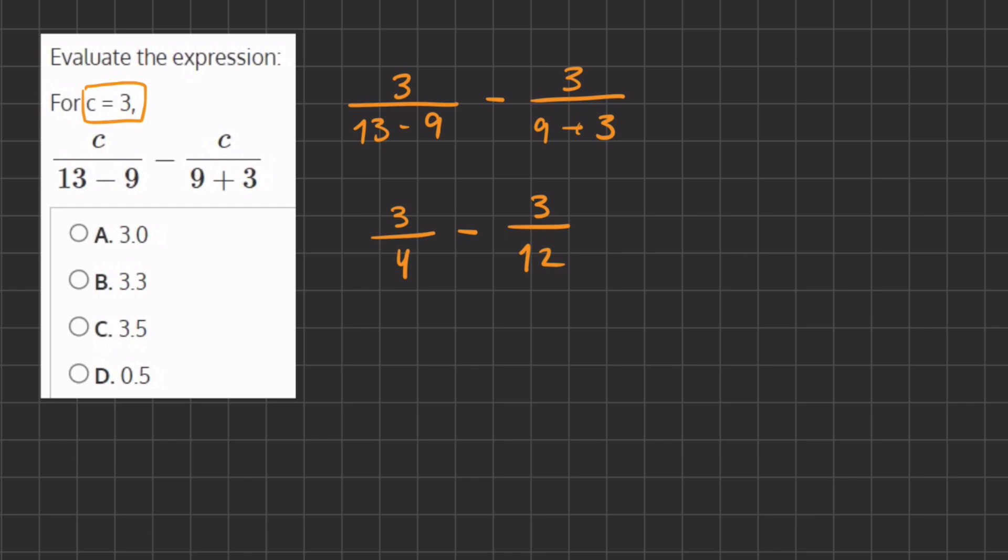Now before we subtract these two fractions together, we can take a look at our second fraction and simplify it. We can divide the numerator and denominator by 3 because both are divisible by 3.